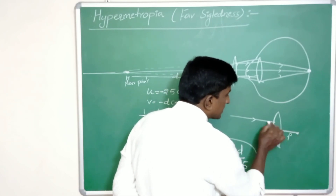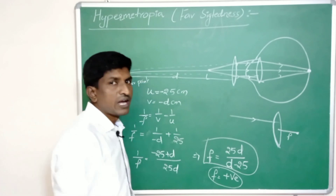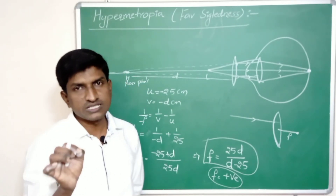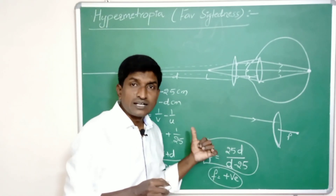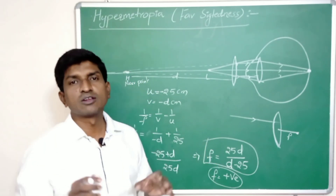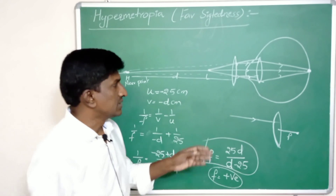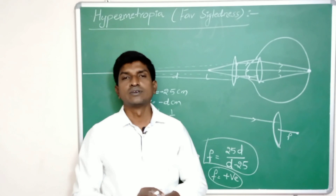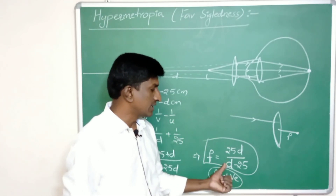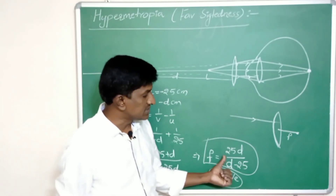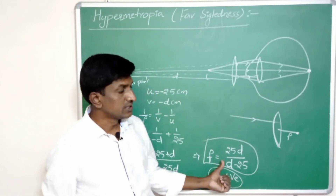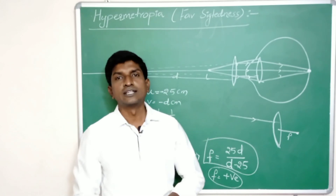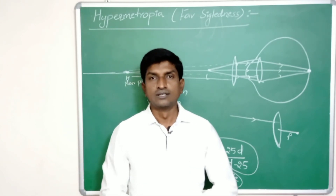The focal length of a convex lens is positive because the focal length is measured in the direction of the incident light ray. The focal length of a concave lens is always negative. This concludes our discussion of hypermetropia, its correction, and the focal length of the convex lens used to correct it. In the next class we will discuss the power of a lens. Thank you.